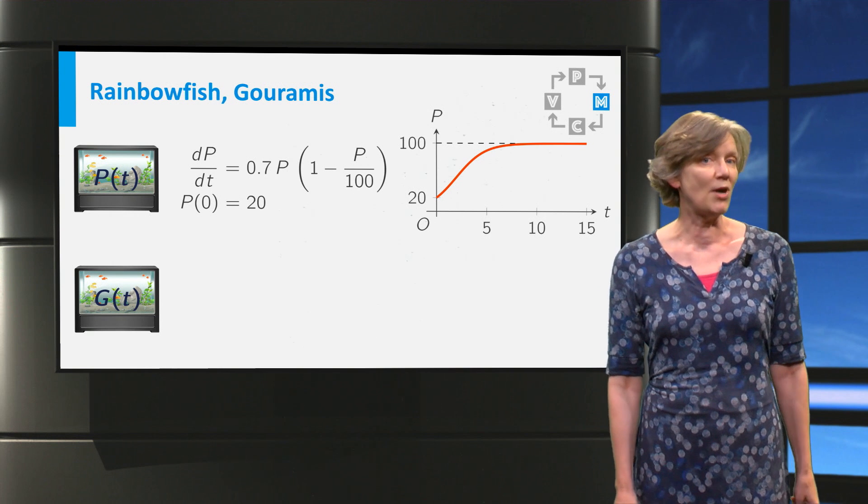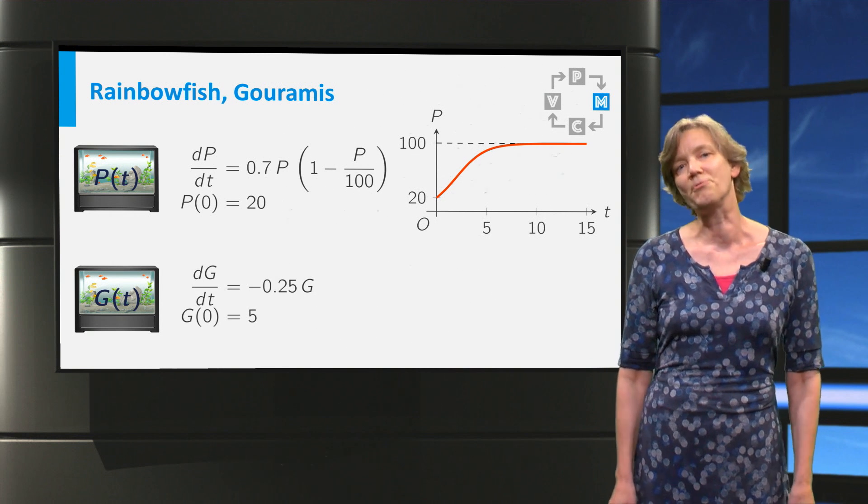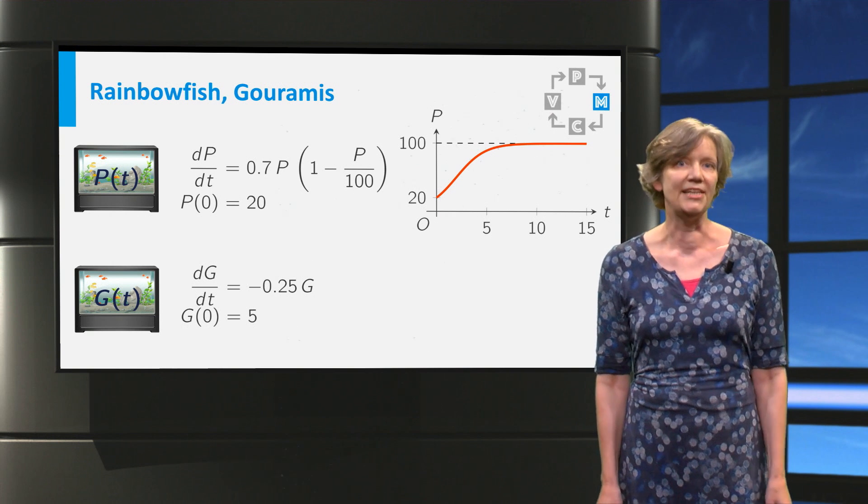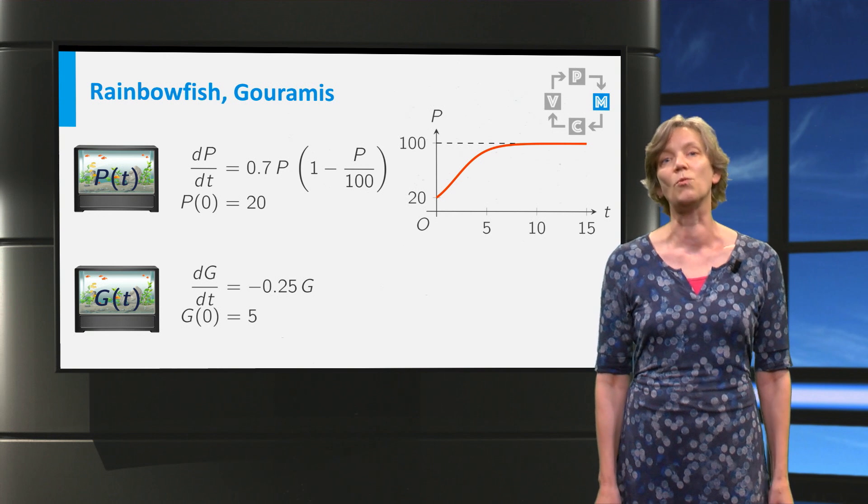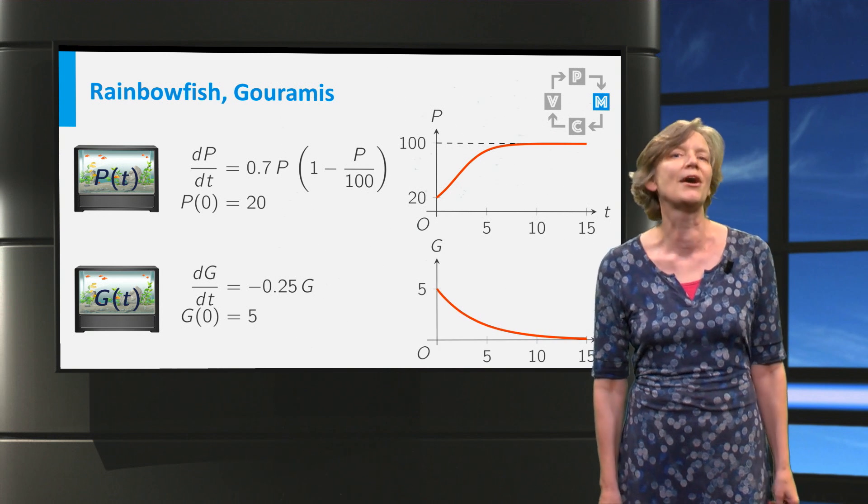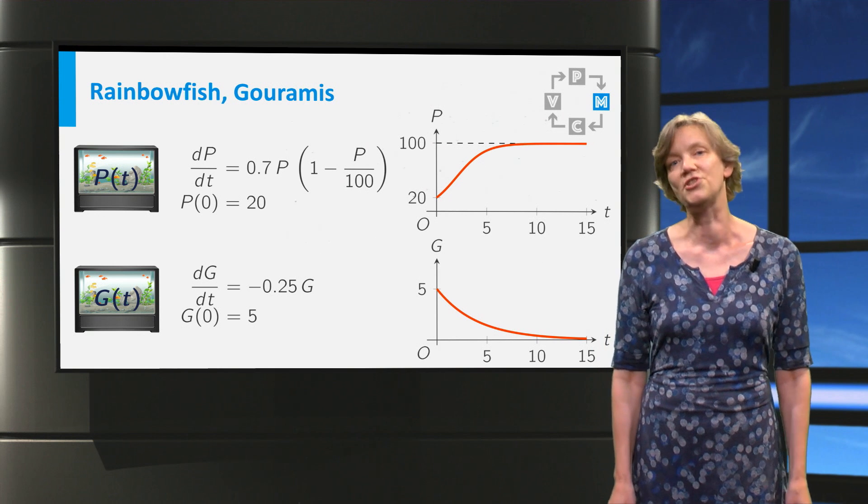The gourami are modeled to do less well by themselves. We assume that without small fish to prey on, their birth rate is lower than their death rate. The net growth rate is minus a quarter. So without prey, the number of gouramis would decrease exponentially from 5 to 0.